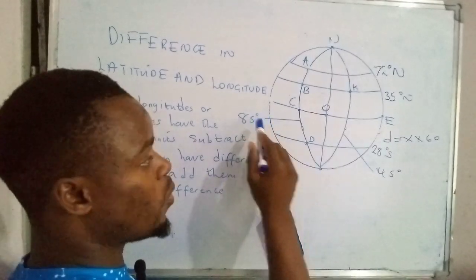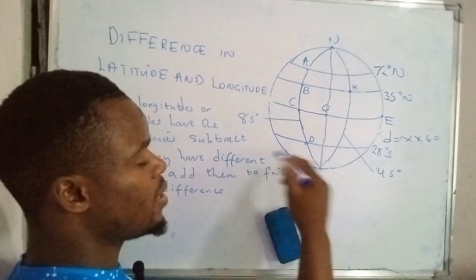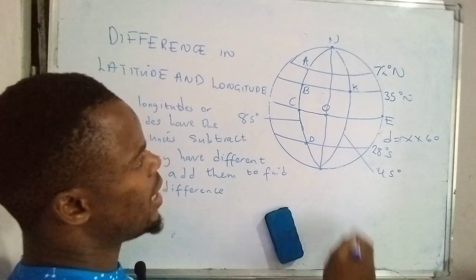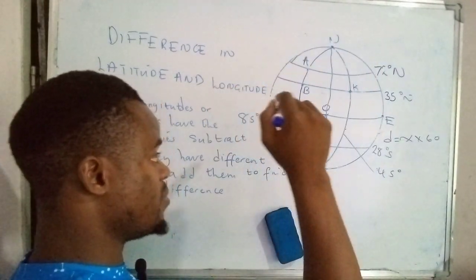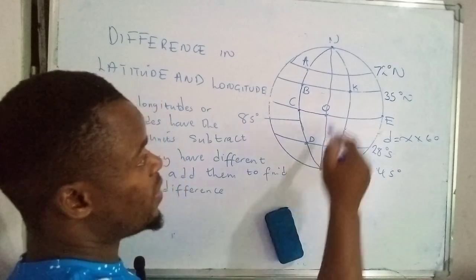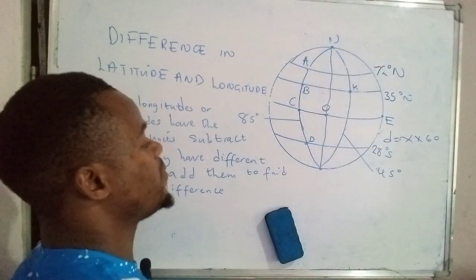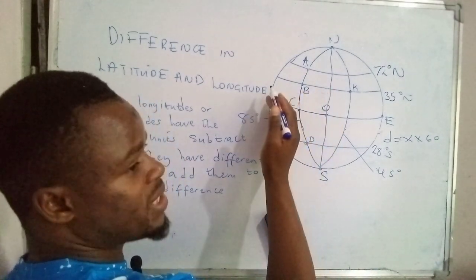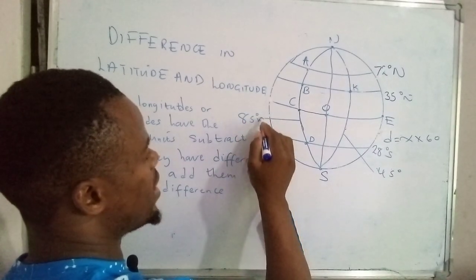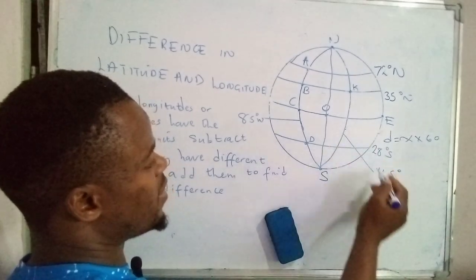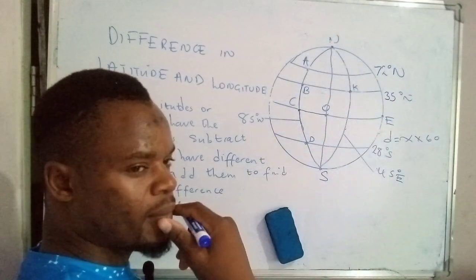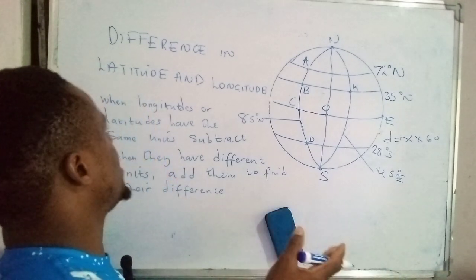For those in the southern hemisphere, the lines that run from west to east — called latitudes — have the unit 'south.' So this one here is 28 degrees south. In the northern hemisphere, this is 35 degrees north and that one is 72 degrees north. For longitudes that run from north to south, those in the western region have the unit 'west,' so this one is 85 degrees west, and this one is 45 degrees east because it's in the eastern region.